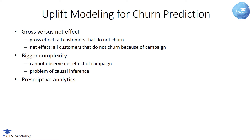Obviously, the uplift perspective to churn prediction introduces bigger complexity, since we can never precisely observe the net effect of a treatment. In other words, we cannot simultaneously apply a treatment and not apply a treatment to the same customer. This essentially reduces to a problem of causal inference. Uplift modeling closely relates to prescriptive analytics, as it tries to precisely prescribe which customer population we should target using well-designed analytical models.